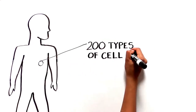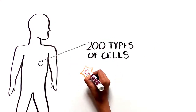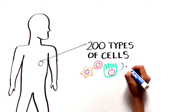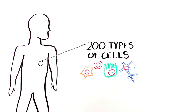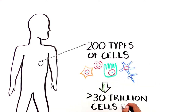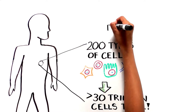The human body is made up of 200 different types of cells, which make up more than 30 trillion cells in our bodies. This number is even more amazing when you consider that all of these cells arise from a single-celled embryo.